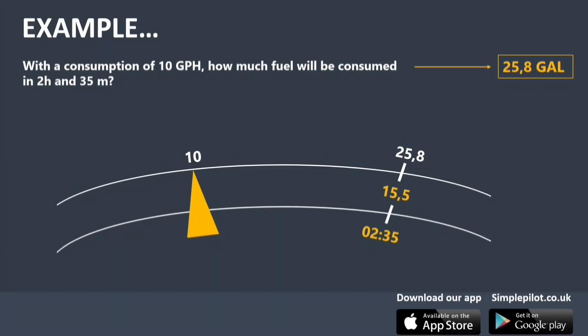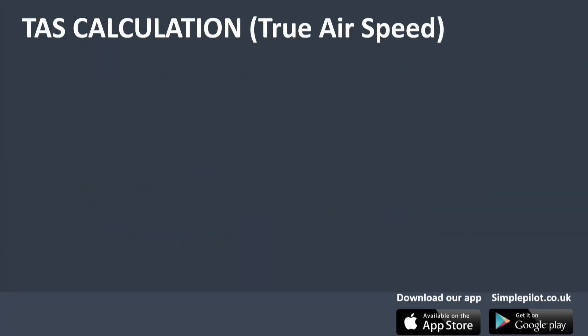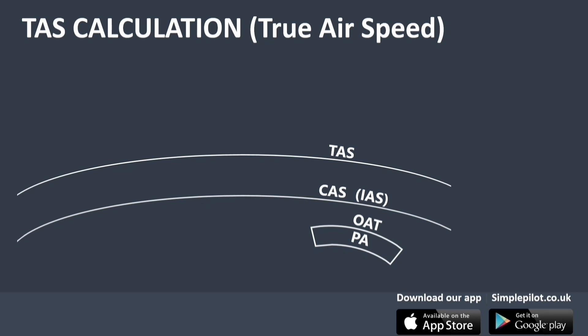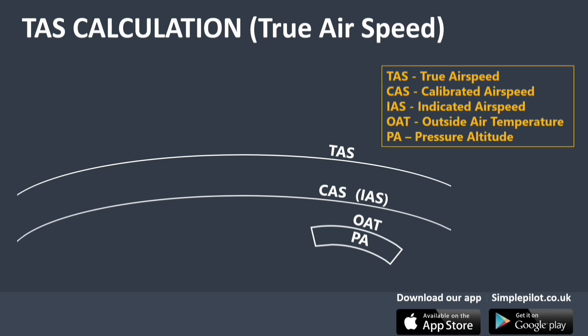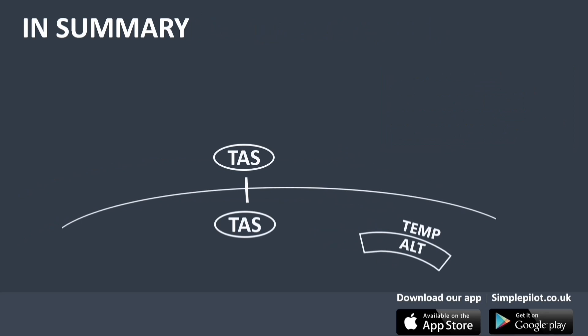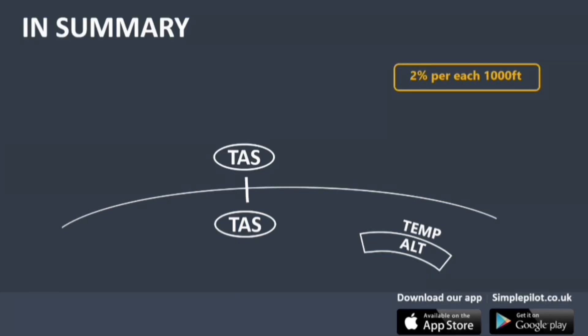Let's continue with the calculation of true airspeed. The interior windows should be used in conjunction with the three main scales. The true airspeed is represented on the outer scale, the indicated or calibrated airspeed on the middle scale. In the upper right inner window, we find the pressure altitude inside and the air temperature outside. First, align the pressure altitude with the current outside air temperature; then read the true airspeed on the outer scale corresponding to the current indicated airspeed. As a rule of thumb, true airspeed increases by 2% per each 1,000 feet.